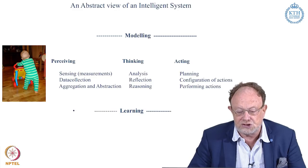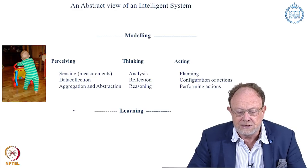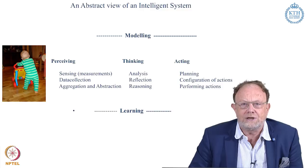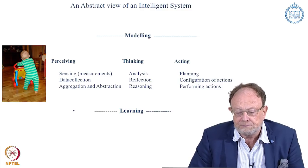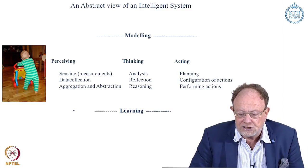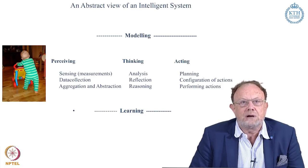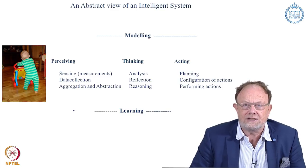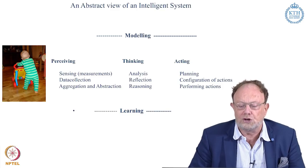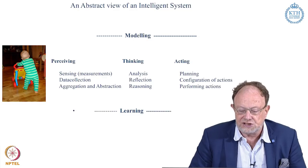Then we also need what we can call thinking — that means analysis, reflection, and reasoning based upon our perceptions. And finally we need acting: planning, configuration, and performing those actions. As stated above, all these parts have to be iteratively improved through learning mechanisms in order to achieve adequate intelligent behavior.